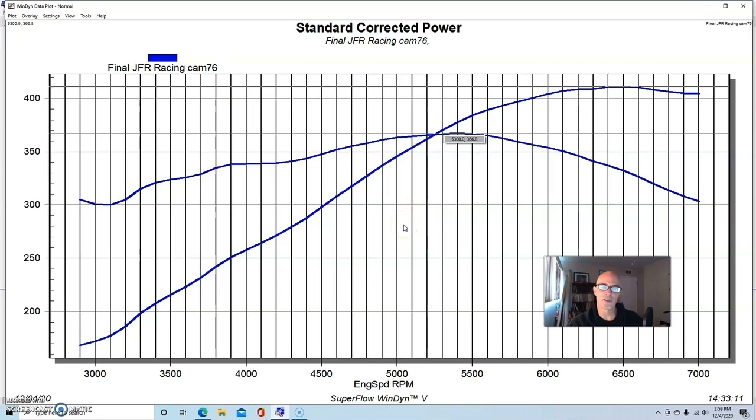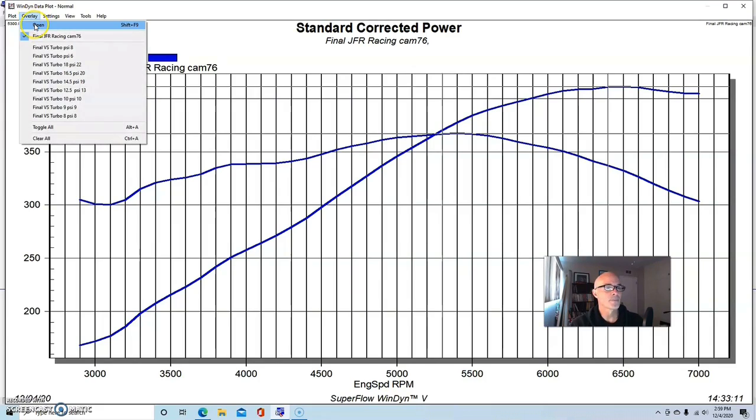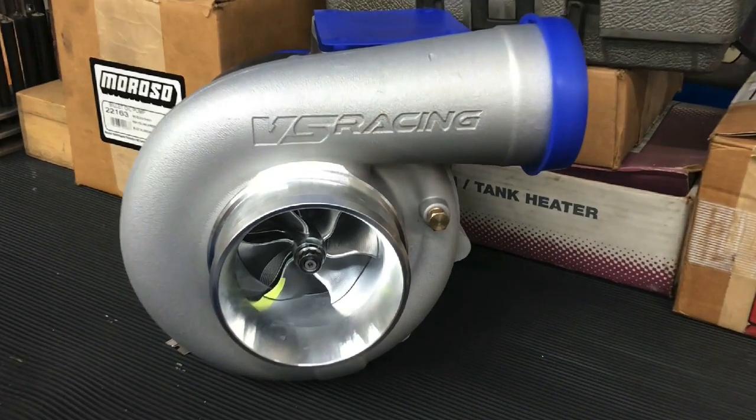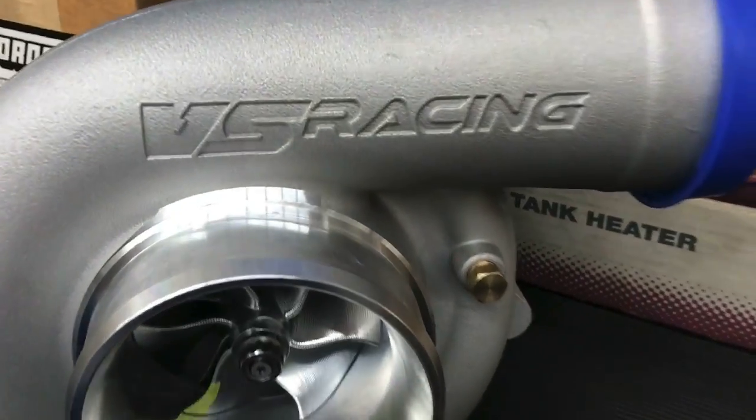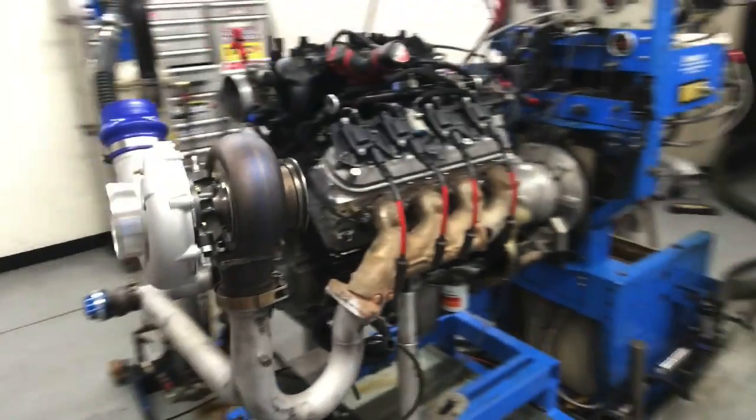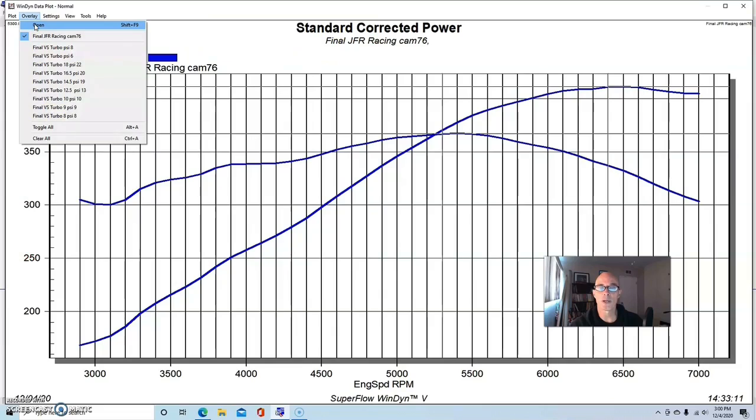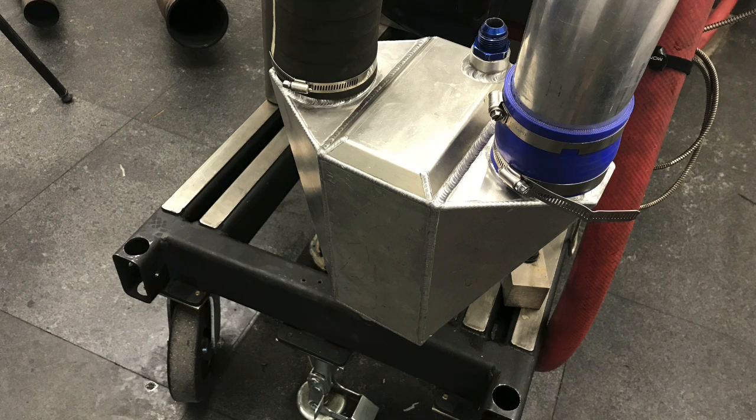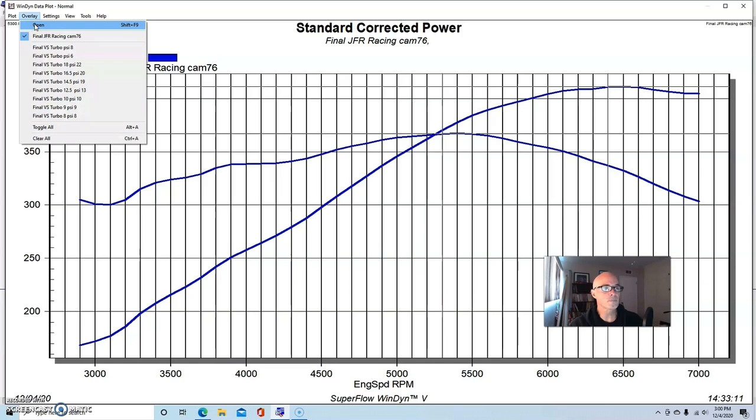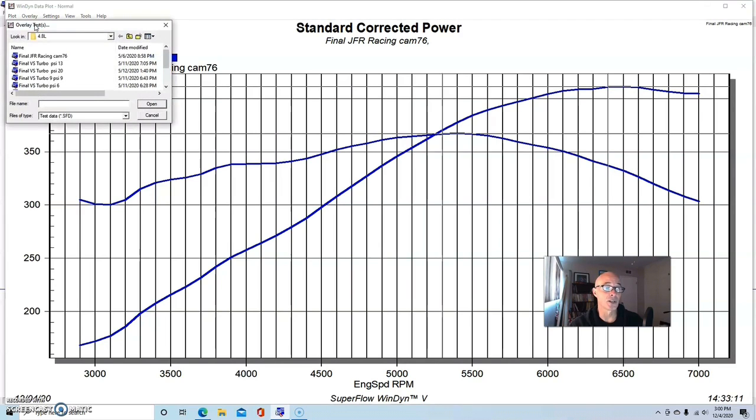Run in naturally aspirated trim, this 4.8 liter produced 411 horsepower and 367 foot-pounds of torque. It's not a real powerful 4.8 liter combination, but if you start with a motor that makes over 400 horsepower and start adding boost to it, it's pretty easy to make a lot of power, especially if you have a lot of turbo. We ran our VS Racing turbo with the truck exhaust manifolds feeding our Y-pipe with two Turbosmart 45 millimeter wastegates.